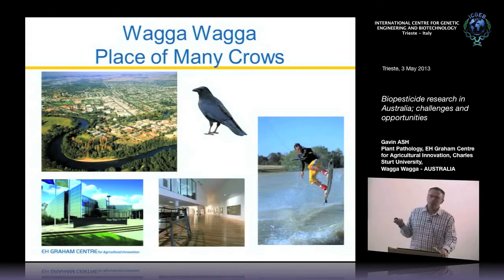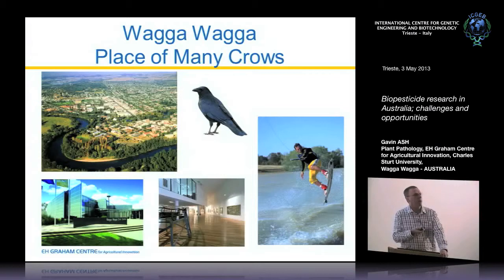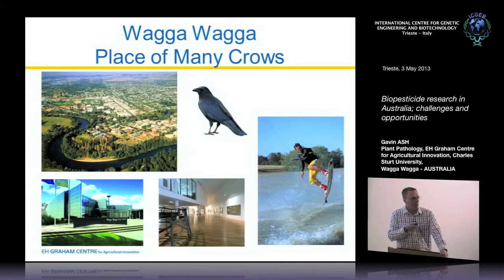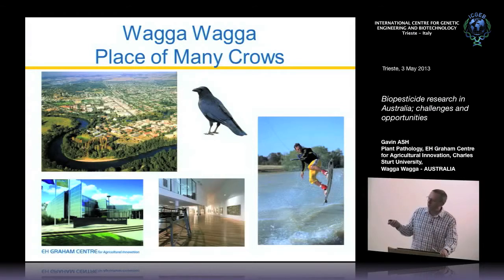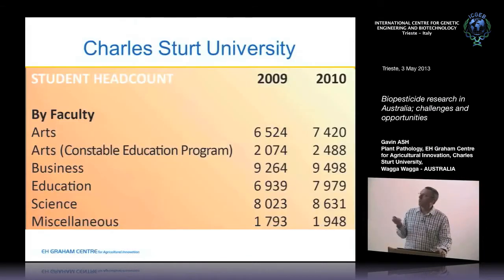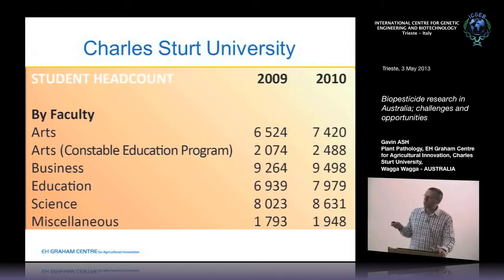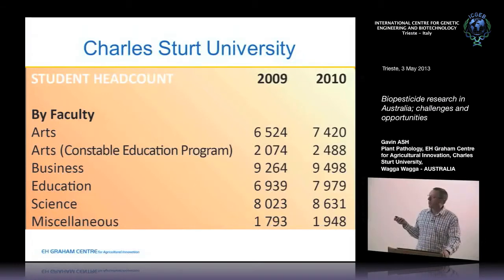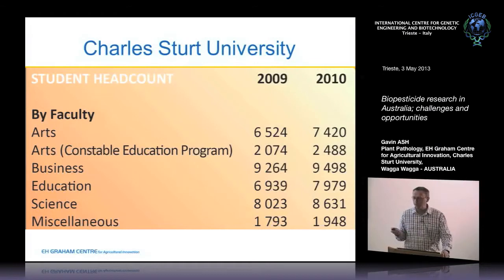This river flows 1,200 kilometres to Adelaide where it empties into the Great Australian Bight, and south of there is Antarctica. We have modern facilities within the city and a fairly large university. Within the university we have arts, business, education, science and other groups. For science, we have over 8,000 students within our science faculties, dispersed across the number of campuses.